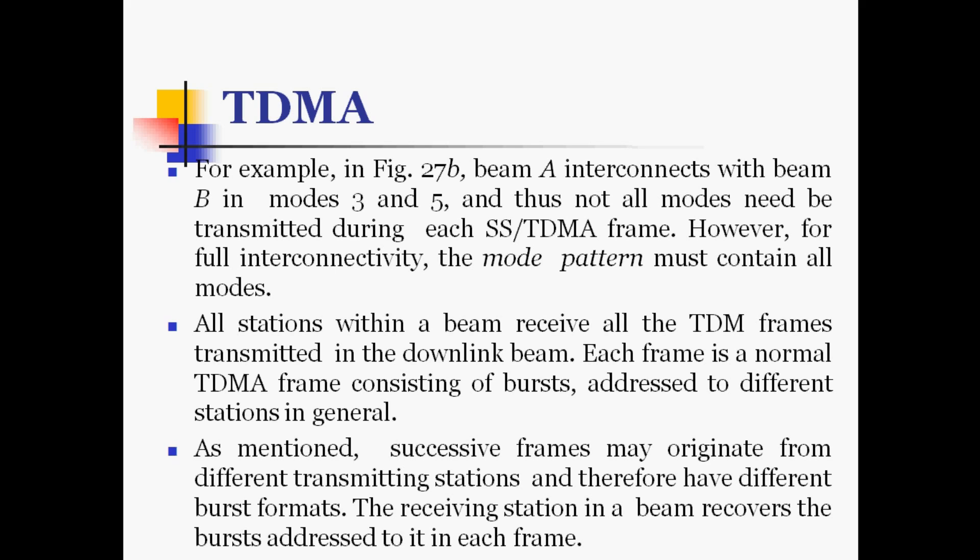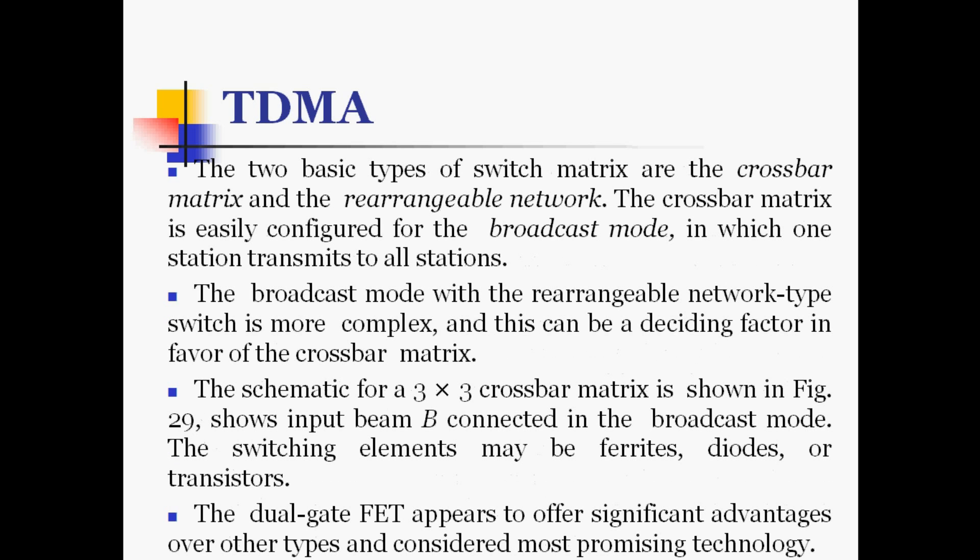Successive frames may originate from different transmitting stations and therefore have different burst formats. The receiving station in a beam recovers the bursts addressed to it in each frame. The two basic types of switch matrix are the crossbar matrix and rearrangeable network. The crossbar matrix is easily configured for broadcast mode, in which one station transmits to all stations. The rearrangeable network type switch is more complex, which can be a deciding factor in favor of the crossbar matrix.